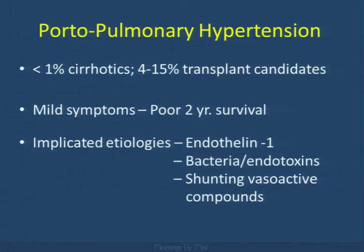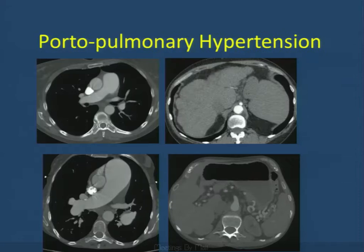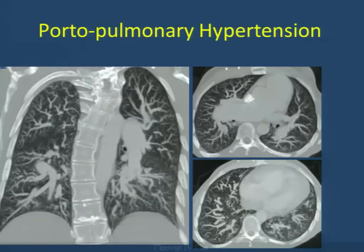A couple of specific cases: pulmonary hypertension associated with liver disease. Porto-pulmonary hypertension is seen in less than 1% of cirrhotics, but in a transplant center, up to 4–15% of transplant candidates will have this condition. They may have mild symptoms but a poor prognosis post-transplantation. Various factors have been implicated including toxins bypassing the liver, endothelin-1, and shunting of vasoactive compounds. Here is an individual with severe pulmonary hypertension secondary to liver disease showing dramatic enlargement of the main pulmonary artery and very tortuous pulmonary arteries.